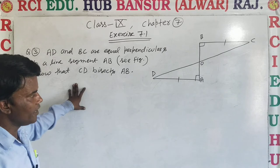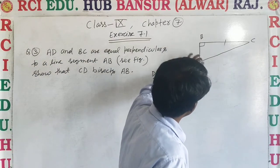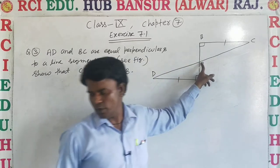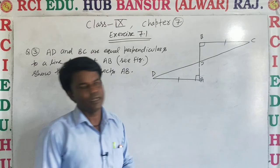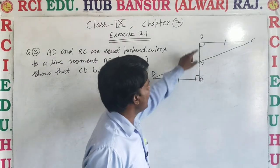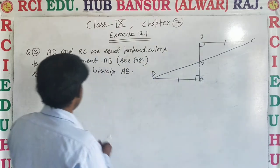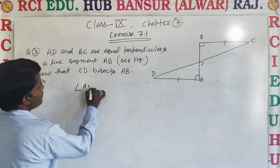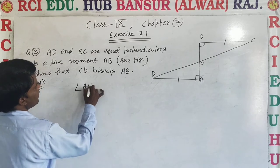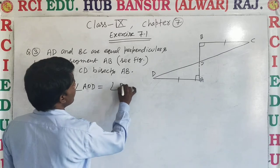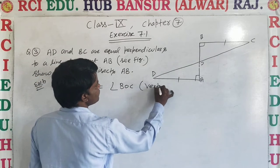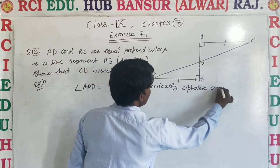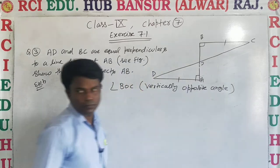We know that OB and OA are given. CD and AB intersect at point O. This means angle AOD and angle BOC are vertically opposite angles, so angle AOD is equal to angle BOC.